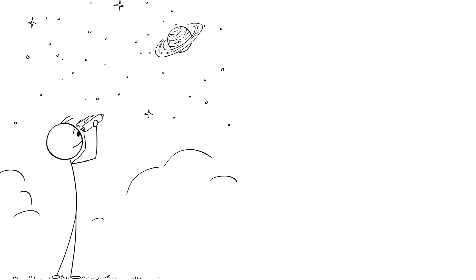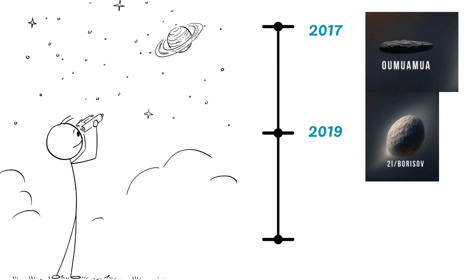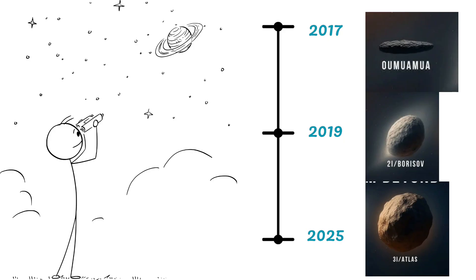So far, we've spotted three of them. In 2017, the mysterious Oumuamua. In 2019, the comet Borisov. And now, in 2025, our latest cosmic tourist, 3i Atlas.